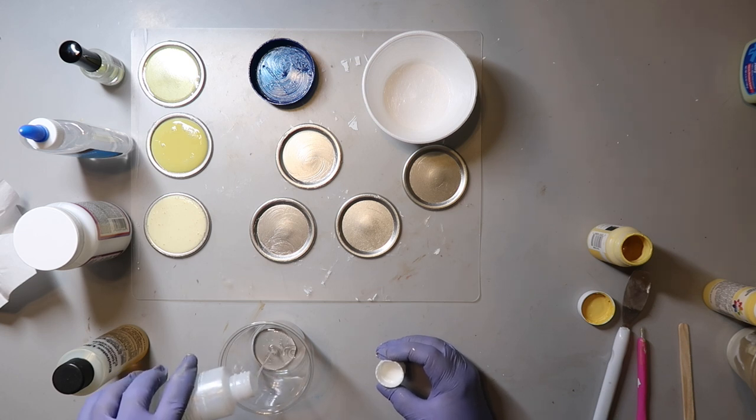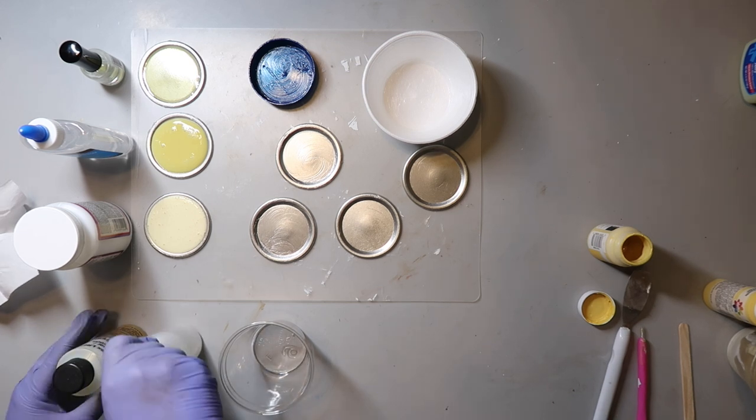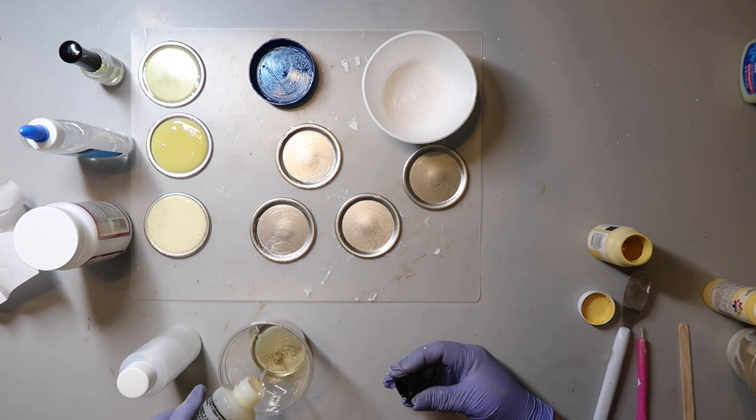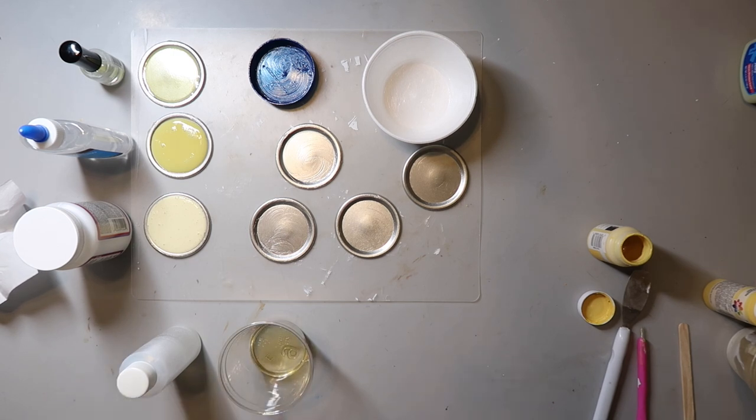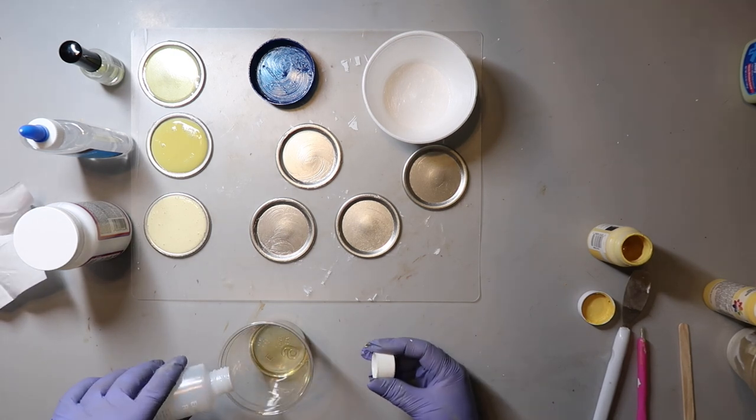On today's fake food making episode, I'm attempting to make fake lemons. I'm trying nail polish, clear glue, Mod Podge, and resin. Which one's going to turn out? You got to keep watching to find out.